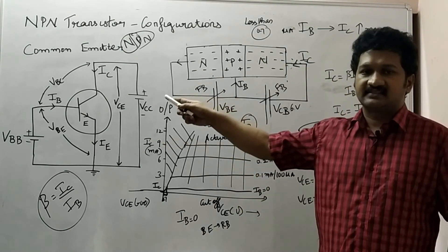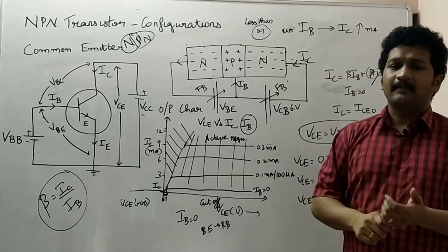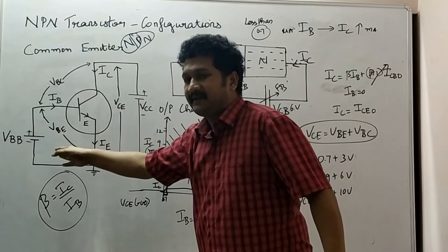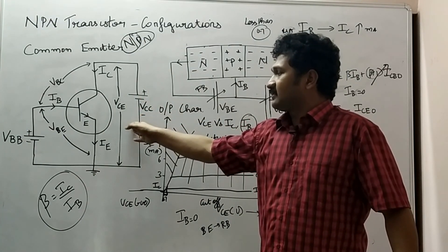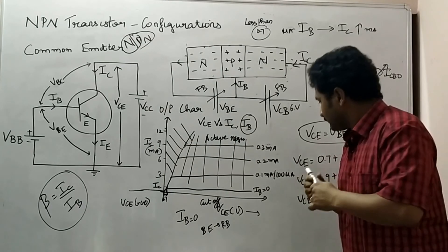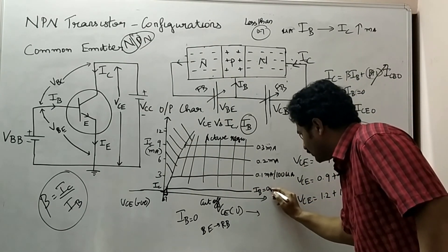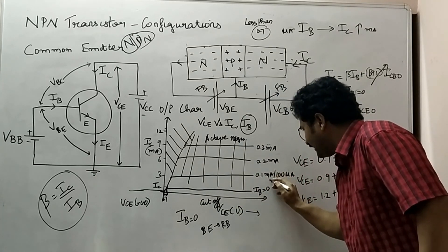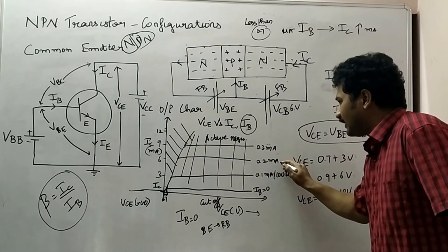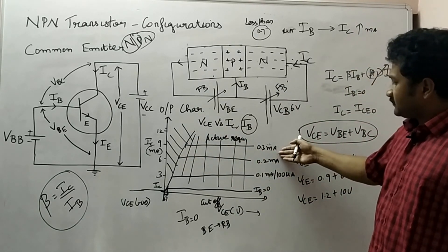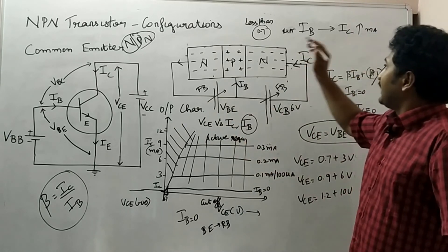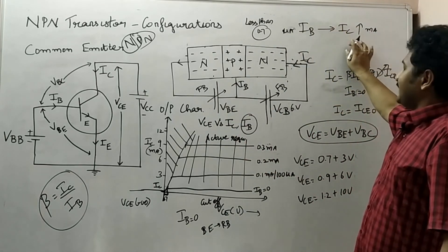This is all about the output characteristics of an NPN transistor in common emitter configuration. In CE configuration, the emitter is grounded; VBE and IB are input parameters, while VCE and IC are output parameters. From these we study the working of the transistor. When IB is 100 microamps, we get about 3 milliamps of collector current; at 200 microamps IB we get 6 milliamps; at 300 microamps IB we get 9 milliamps — confirming that base current in microamps is amplified to collector current in milliamps.